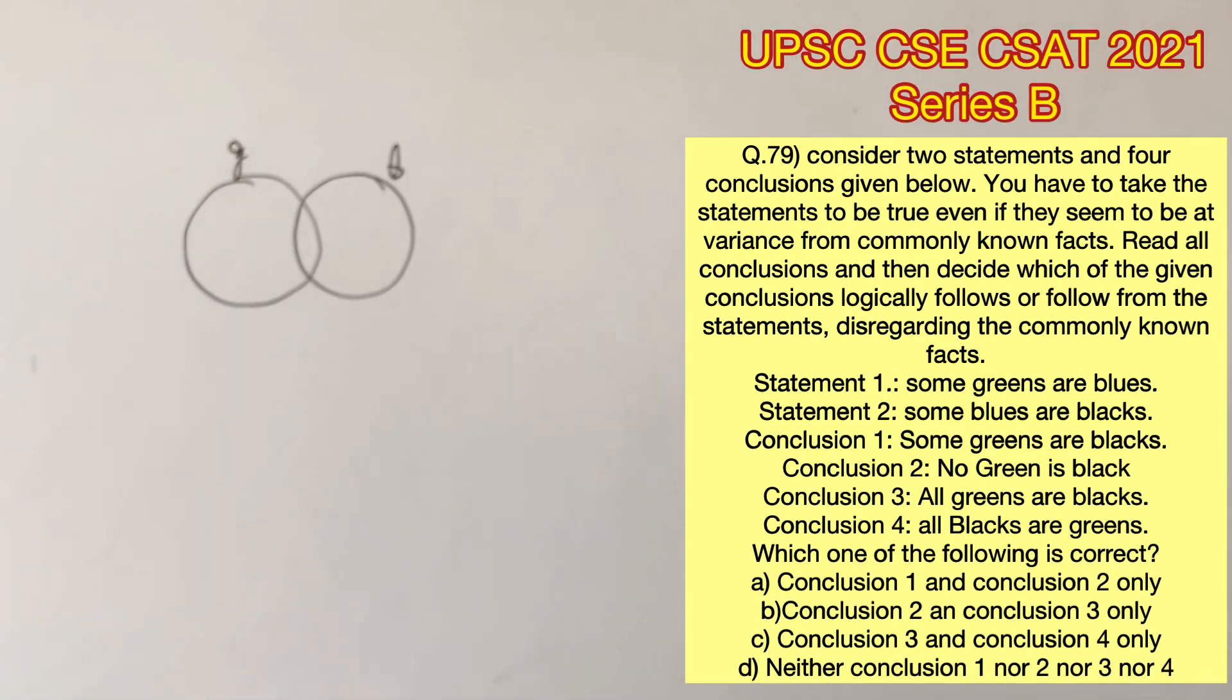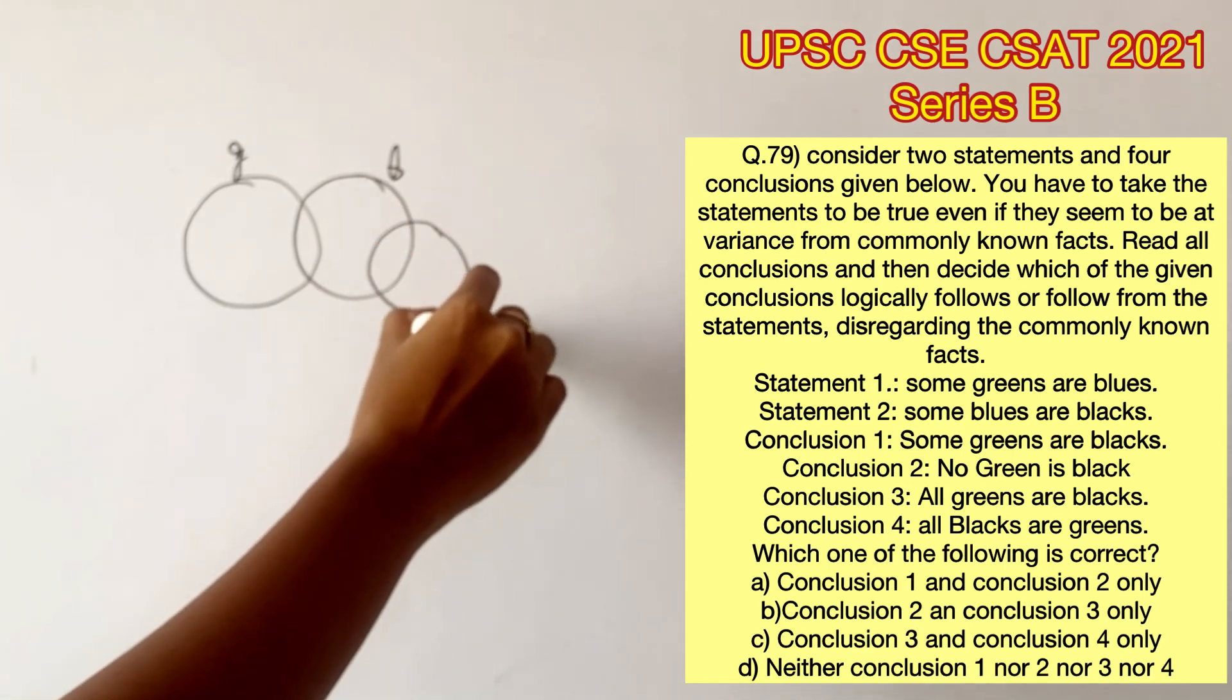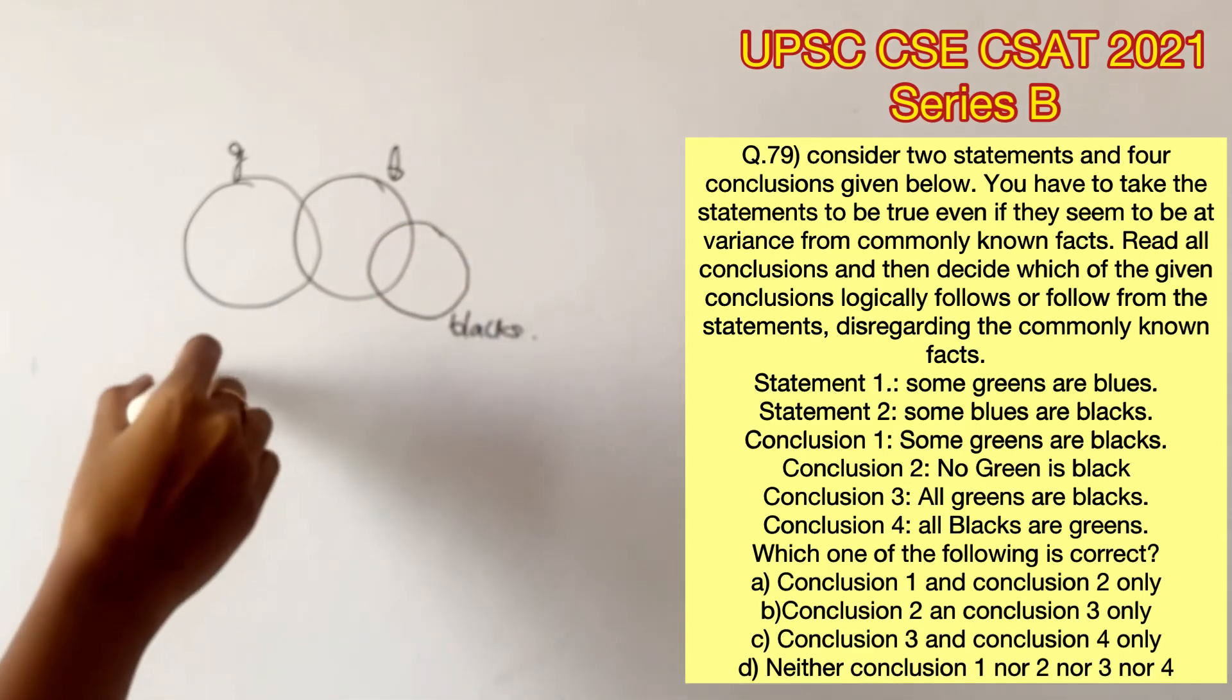Statement 1 says some greens are blues. Statement 2 says some blues are blacks, which can be represented in many different forms.